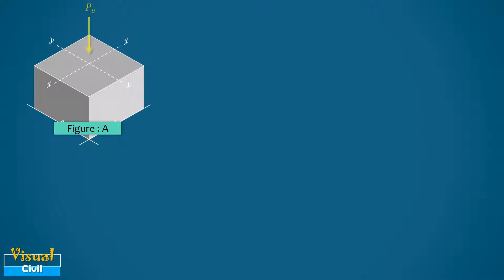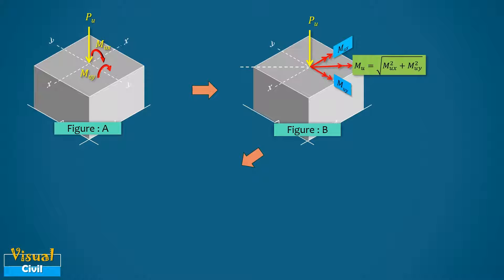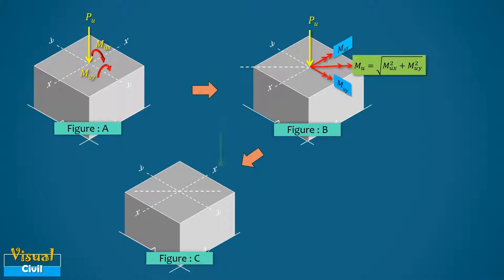The factored moments Mux and Muy acting on a column section, with respect to bending about the major axis and minor axis respectively, can be resolved into a single resultant moment Mu, which acts about an axis inclined to the two principal axes as shown in figure (b). Alternatively, the resultant eccentricity may be obtained as shown in figure (c).